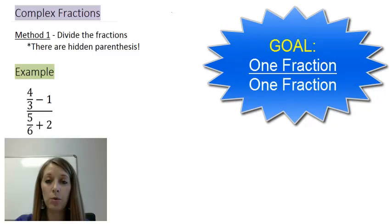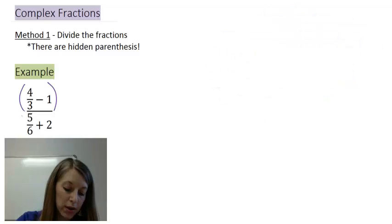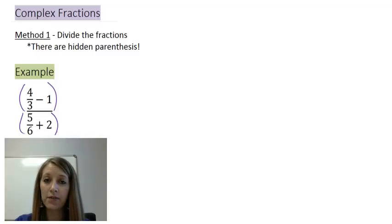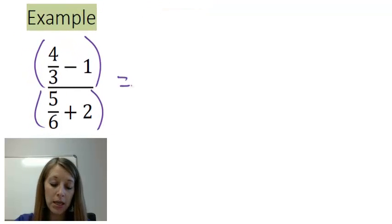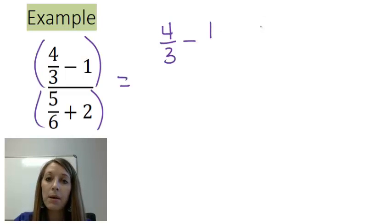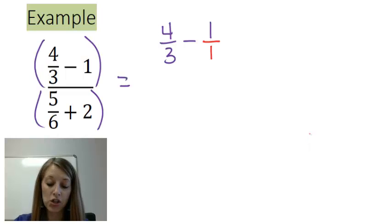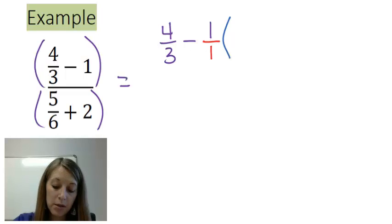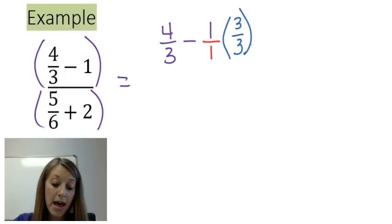My goal is to have one fraction in the numerator divided by one fraction in the denominator, and then do the fraction division. I'll put those parentheses in to remind you that you cannot just flip individual fractions — you have to simplify first. To get one fraction in the numerator, I need to combine four-thirds minus one. I'll rewrite one as a fraction by putting it over one. To convert a whole number into a fraction, just divide it by one.